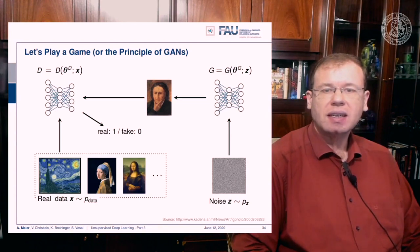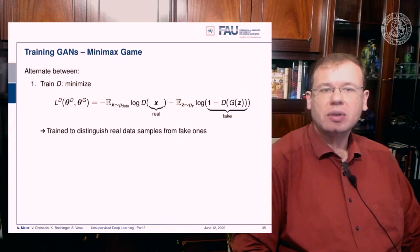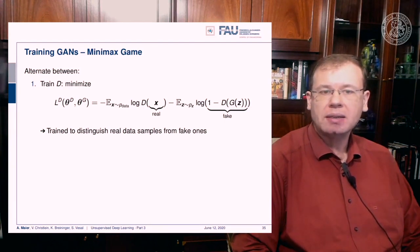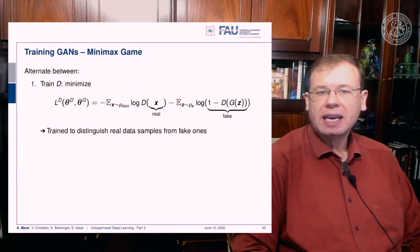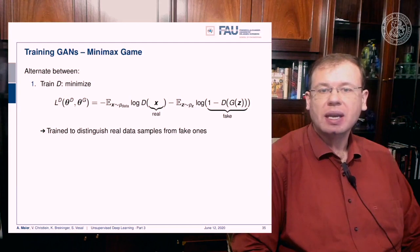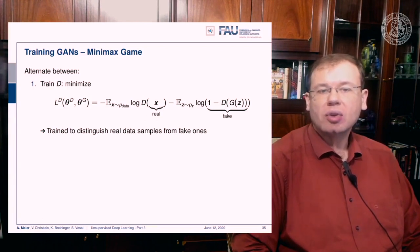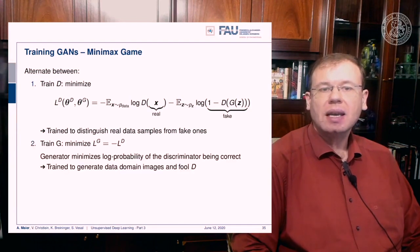Once we have this neural network representation, we can describe a loss. The discriminator loss depends on the parameters of the discriminator and the generator, minimizing the expected value of the logarithm of the discriminator's output for real samples minus the expected value of the logarithm of 1 minus the discriminator of the generator applied to noise. It is trained to distinguish real data samples from fake ones. To train the generator, we simply minimize the negative loss of the discriminator.